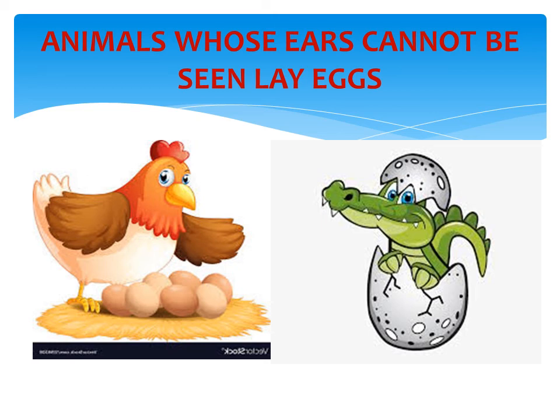The next slide is of a hen with its egg, and a crocodile hatching from an egg. The heading is: animals whose ears cannot be seen lay eggs. The animals whose ears cannot be seen don't have hair on their body — they lay eggs. The hen's ears cannot be seen, it has feathers on its body, and it lays eggs. The crocodile's ears cannot be seen, it doesn't have hair on its body, it has scales, and it lays eggs.